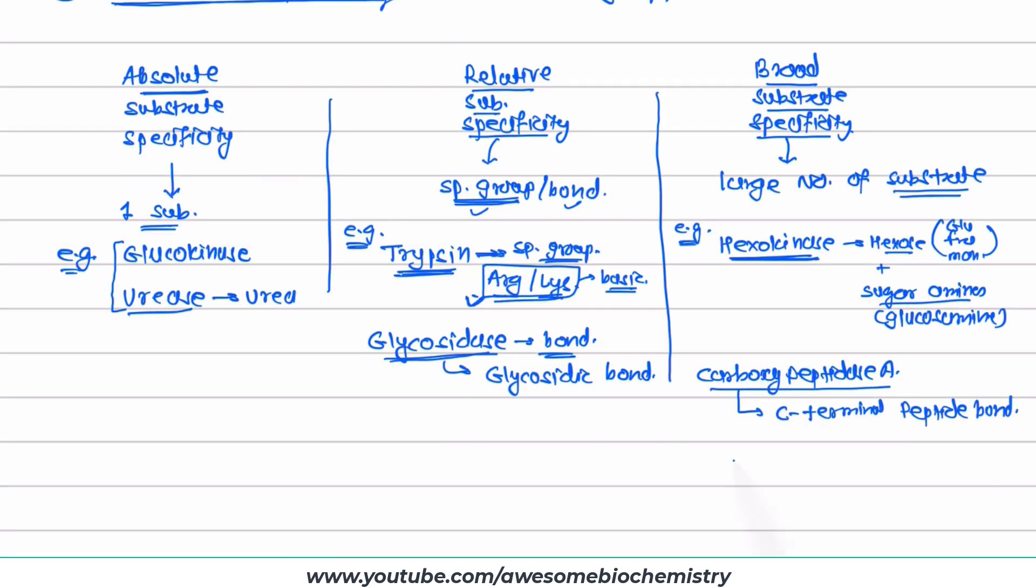So in a polypeptide chain, suppose this is the polypeptide chain where multiple amino acids or polymer of amino acid is there. Suppose this is the N-terminal and this is the C-terminal. So what happens? This C-terminal amino acid is being released by breaking down its immediate peptide bond.